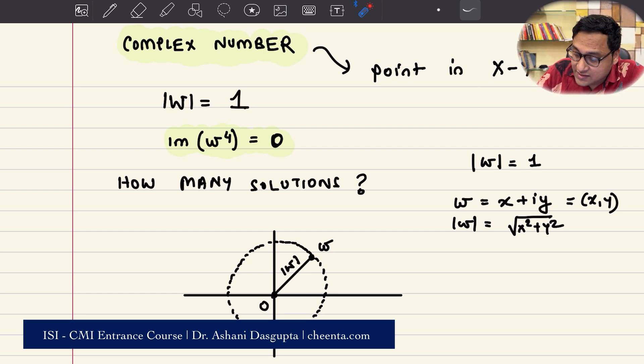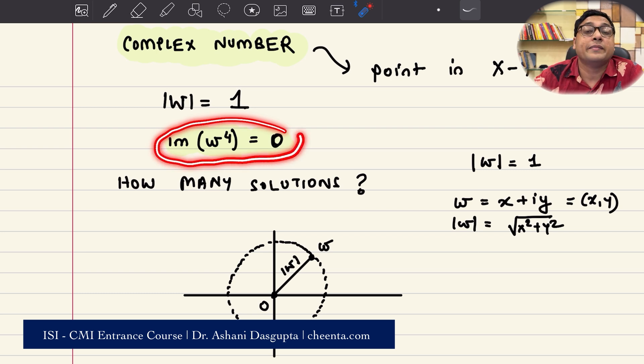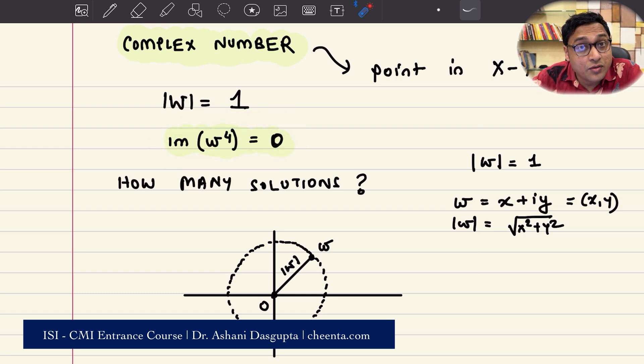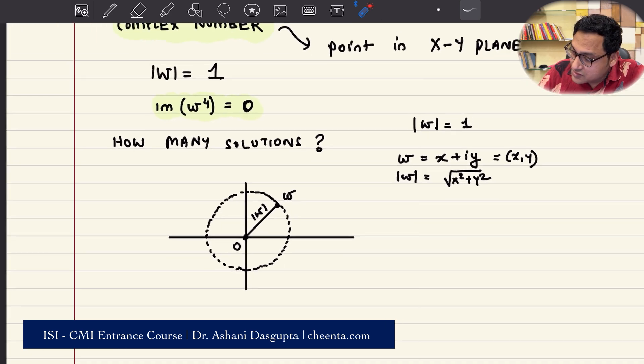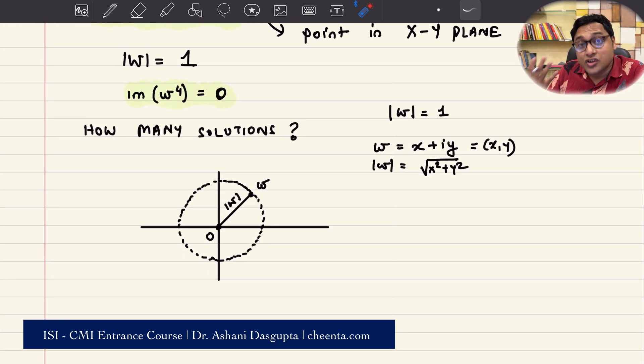The second question is imaginary part of omega to the power 4 equal to 0. What is omega to the power 4? You have to again understand this geometrically.